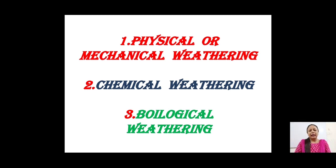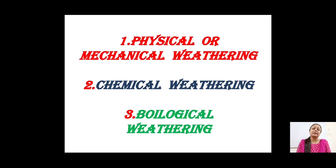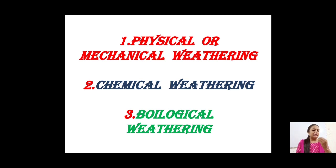In chemical weathering, chemicals present in the atmosphere as well as in the rock itself react through a series of chemical reactions, finally breaking the rock into smaller pieces. In biological weathering, living beings — from unicellular organisms to complex organisms like human beings, animals, and plants — contribute to the breaking of rocks. The next module will cover all three types of weathering in detail. That's all for today, thank you.